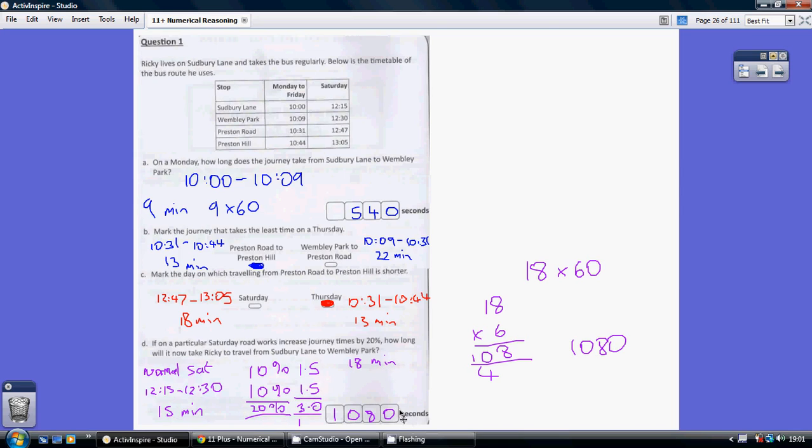The question wants the answer in seconds. So, we've got to do 18 times 60. Well, I think the best thing to do, just do 18 times 6 and add a zero. So, 18 times 6, 6 eights are 48, carry the 4, 108, add the zero, 1080 seconds.